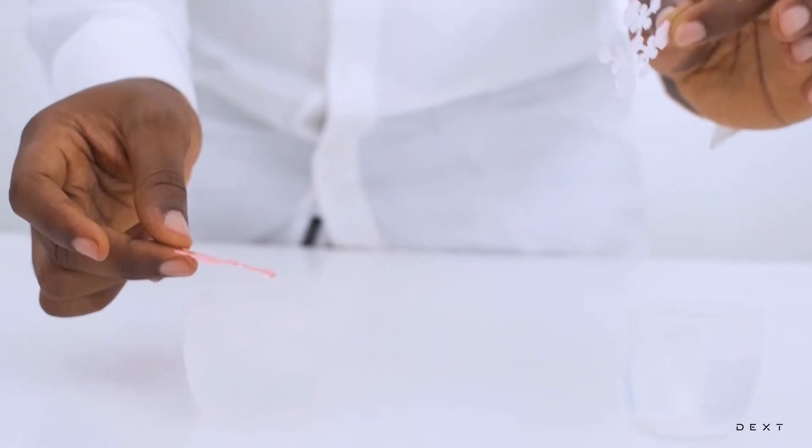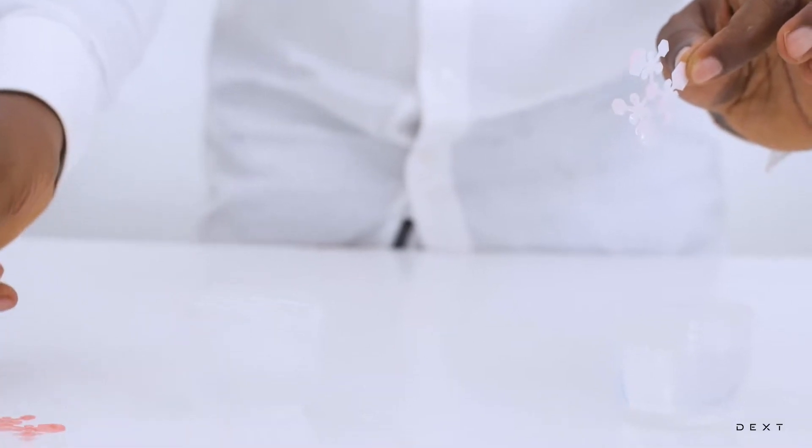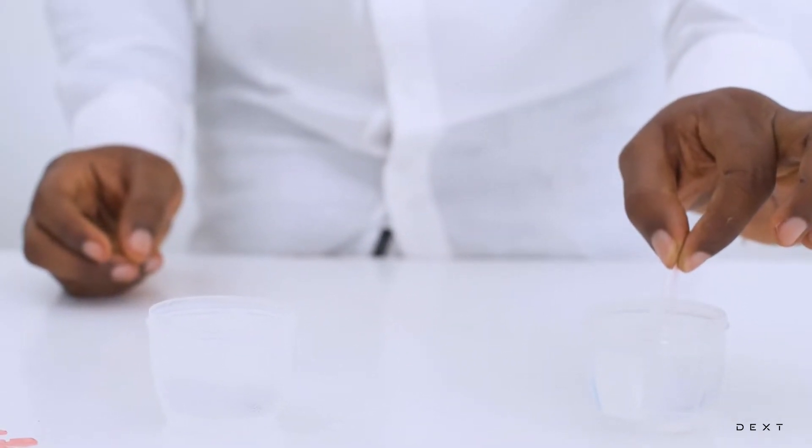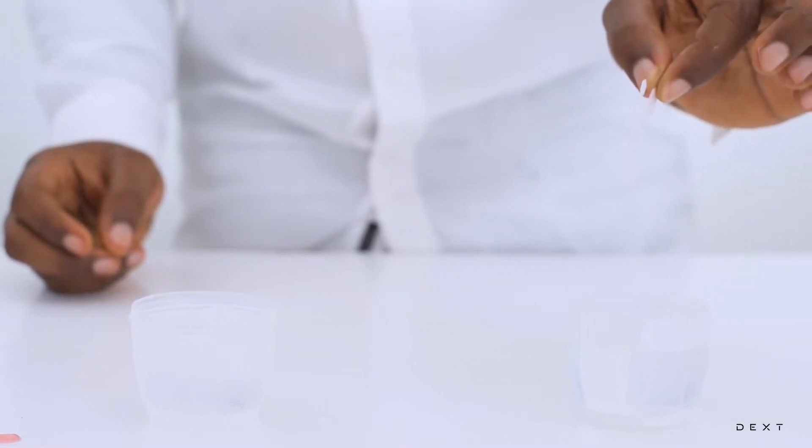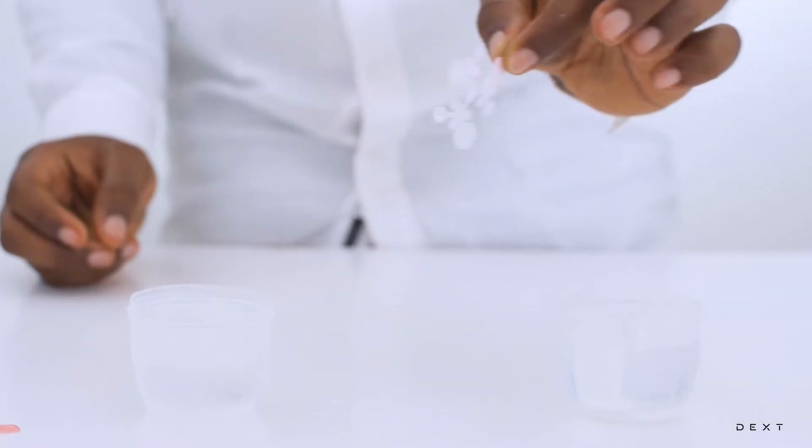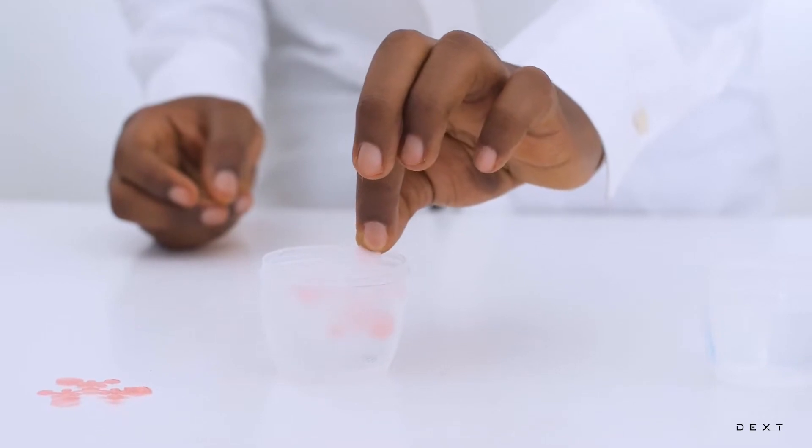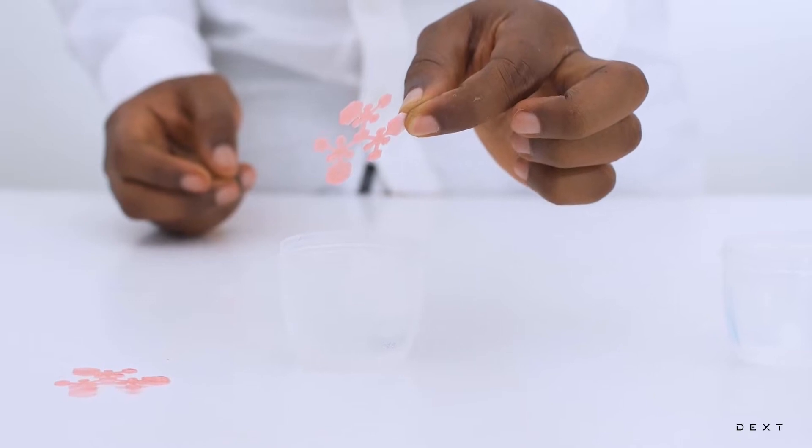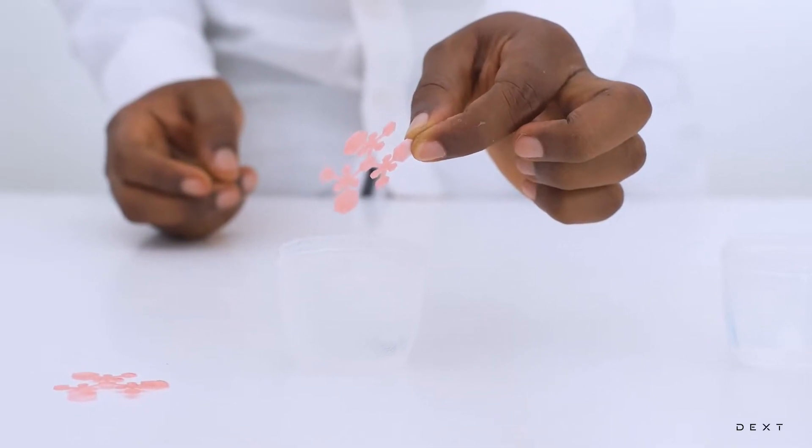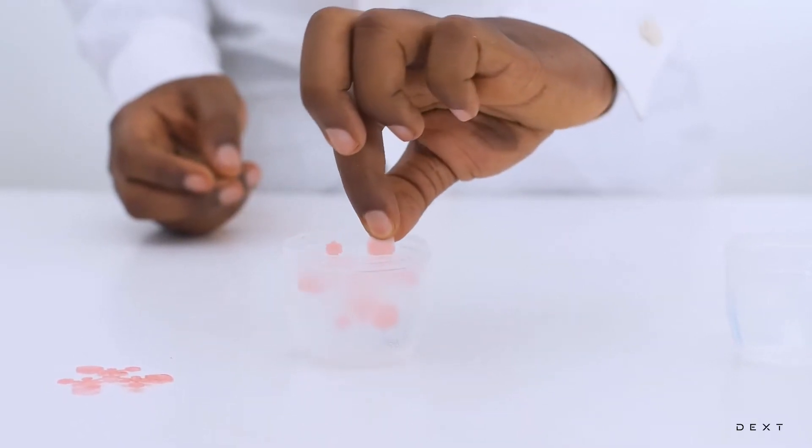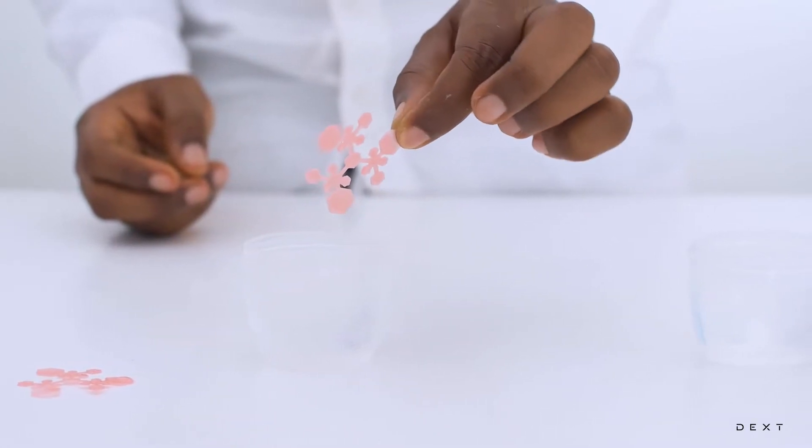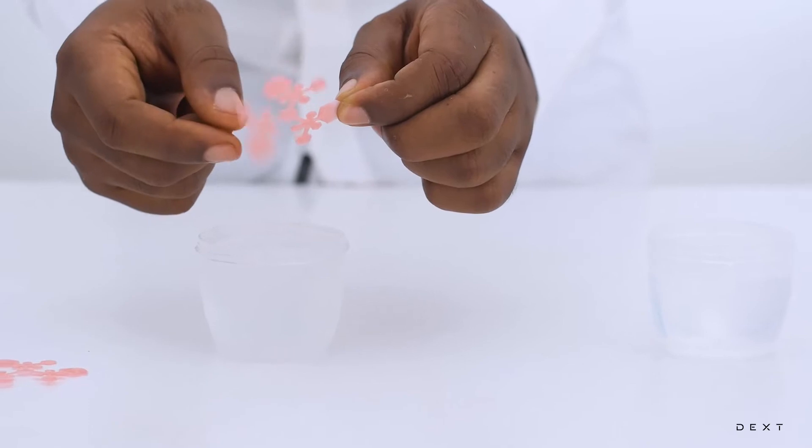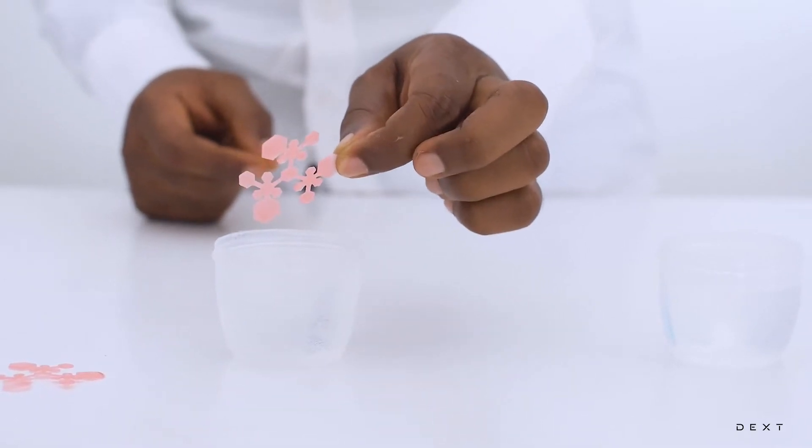And now, let's take this same material. This is how it looks like in warm water. And then this is how the same material looks like in cold water. Once you put it in cold water, you will notice that it becomes hardened and it changes color.